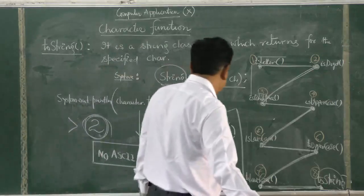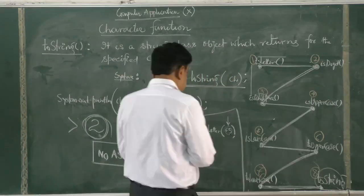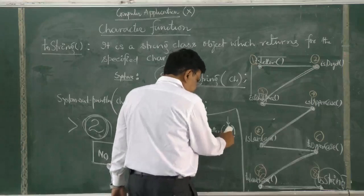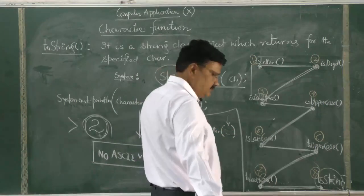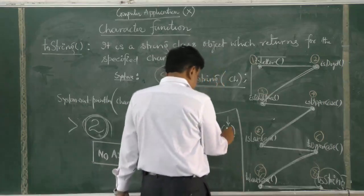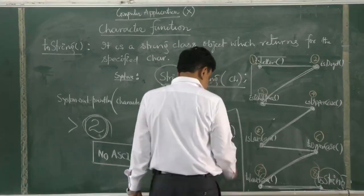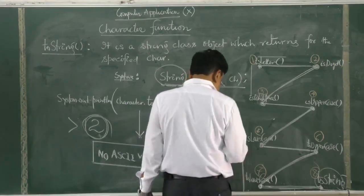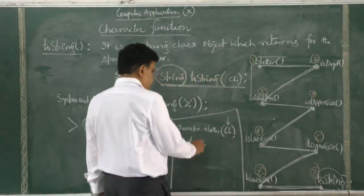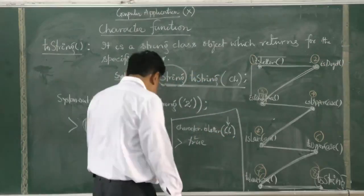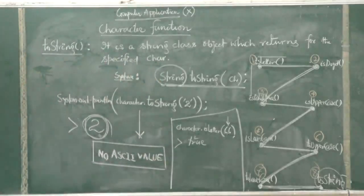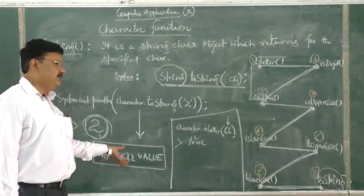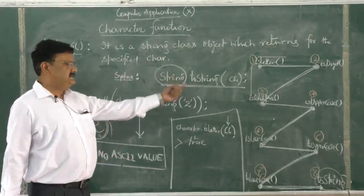Similarly, if I write 65 or any character ASCII value, the answer will be true. If I write 66, which is the ASCII value of B, then the answer will also be true. But in the case of toString, we cannot use ASCII values — the character must be taken directly.